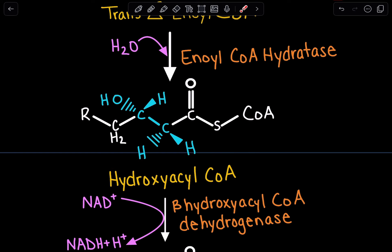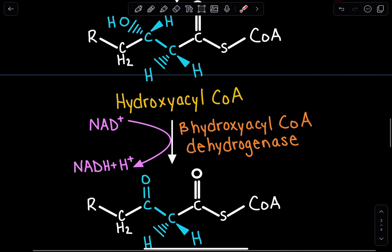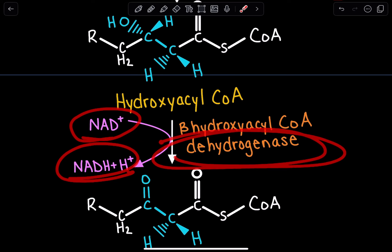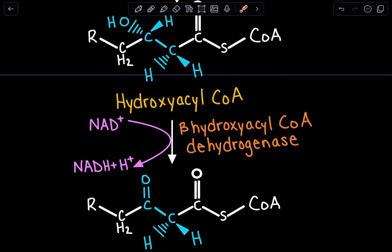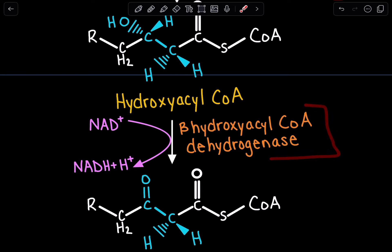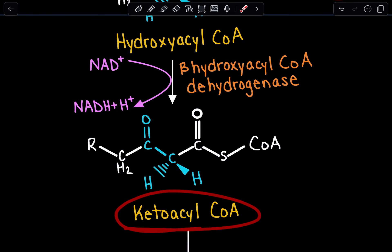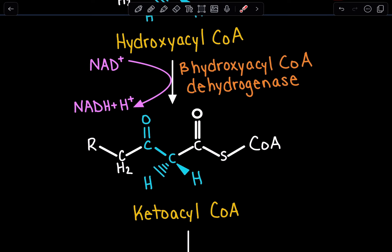Hydroxyacyl-CoA is going to undergo another oxidation-reduction reaction. This time, NAD+ is reduced to NADH. Again, we have a dehydrogenase enzyme — specifically beta-hydroxyacyl-CoA dehydrogenase. As a result, we get ketoacyl-CoA. On that beta carbon, we've generated a carbonyl — we started with just a hydrogen, then formed a double bond, introduced a hydroxyl, and now we have a carbonyl.